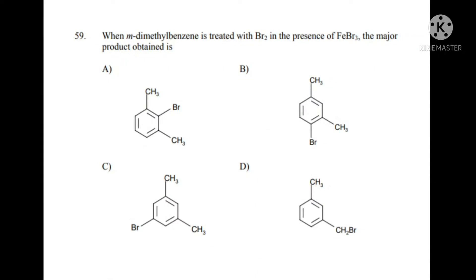Hi friends, welcome back to SBC Chem Tutor. In this video we will discuss an organic chemistry problem. The question is: when meta-dimethylbenzene is treated with bromine in the presence of FeBr3, what is the major product obtained? We will discuss the four options. The reaction is meta-dimethylbenzene undergoing bromination.